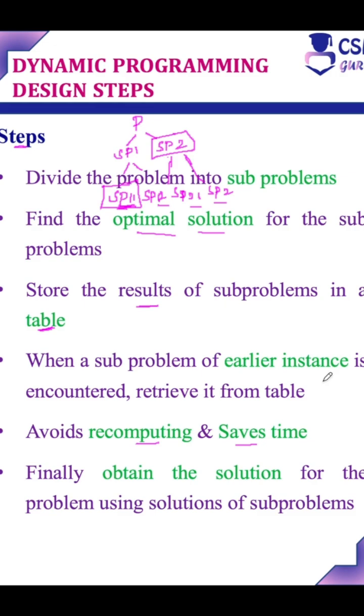Whenever a sub-problem of an earlier instance is encountered, retrieve it from the table. That is, whenever two similar problems occur, we have already solved one problem and stored it in the table. If a similar problem occurs, just retrieve the result from the table instead of recomputing and that will save time.